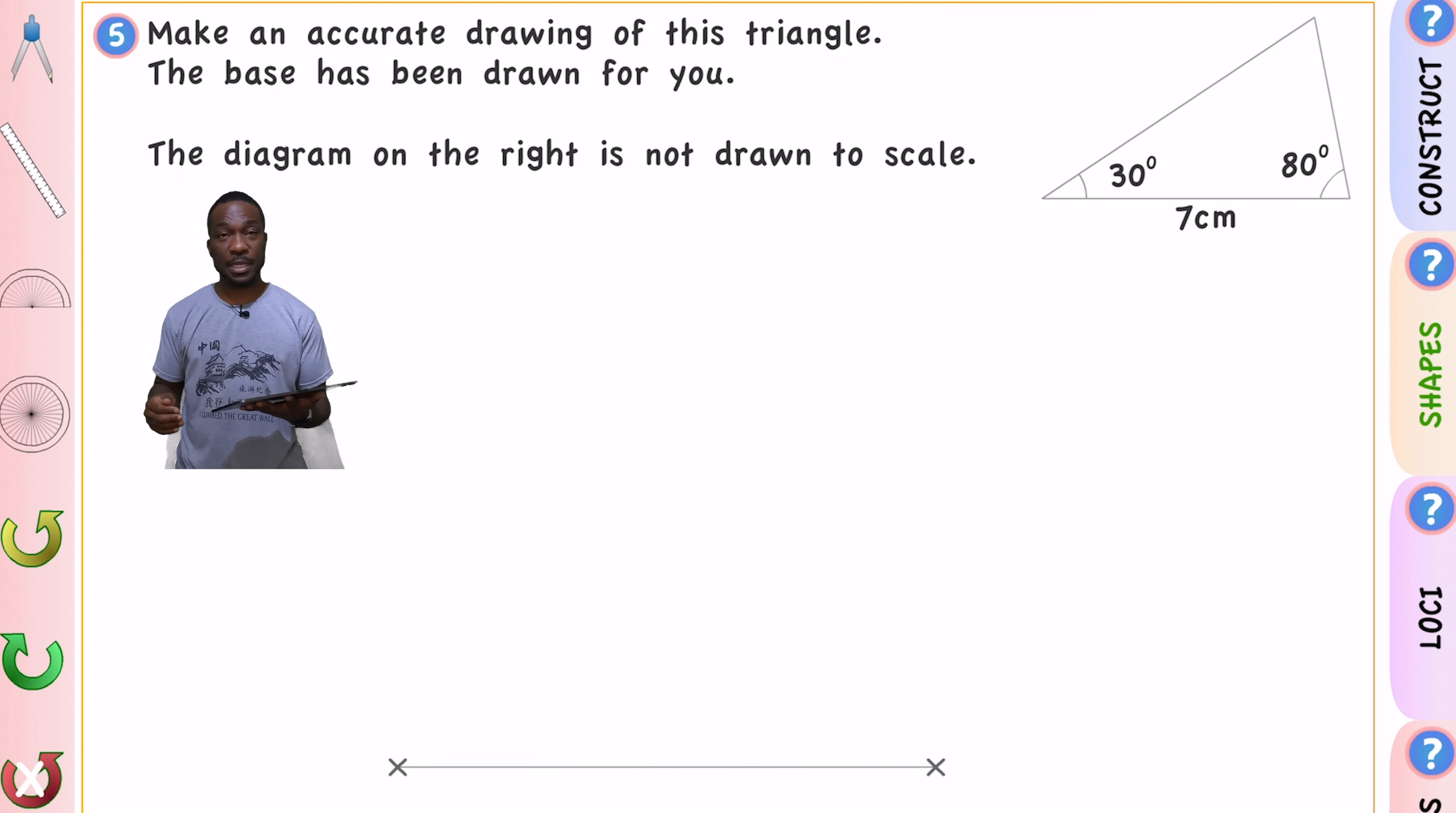So on this one they've given us two angles. Now on this one I don't need my compasses at all. This is actually quite an easy one to do and fairly straightforward in that you shouldn't make a mistake. Let's go. Make an accurate drawing of this. The base has been drawn for you. Let's go.